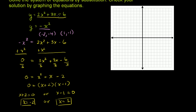Now if you look at the second equation and put in negative 2: 2 times negative 2 squared — negative 2 squared is positive 4, 2 times 4 is 8. Then 3 times negative 2 is negative 6. So 8 minus 6 minus 6: 8 minus 6 is 2, 2 minus 6 is negative 4. So the point negative 2, negative 4 is on this function too — they share that point. And putting x equals 1: 2 plus 3 minus 6 equals negative 1. So the point 1, negative 1 is also on this graph.